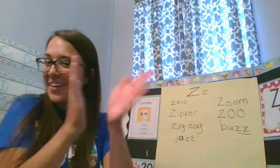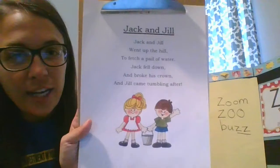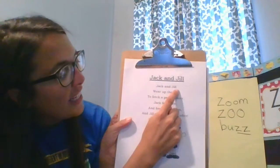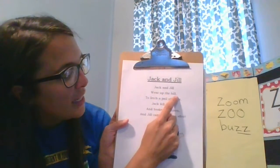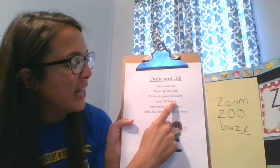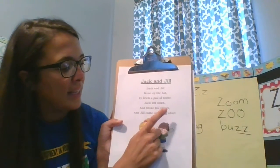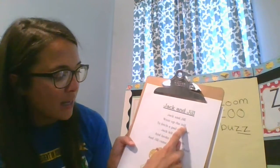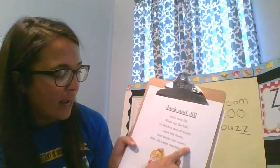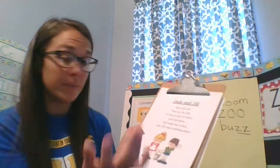Very good! Now we're going to sing another story — we're going to sing Jack and Jill. Jack and Jill went up the hill to fetch a pail of water. Jack fell down and broke his crown, and Jill came tumbling after. And you know what? Nursery rhymes rhyme. Jill and hill rhyme, down and crown rhyme, water and after — kind of — there's a lot of rhymes.